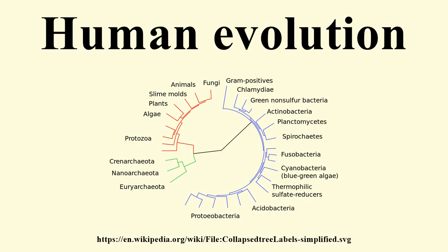According to the recent African origin of modern humans theory, modern humans evolved in Africa possibly from Homo heidelbergensis, Homo rhodesiensis or Homo antecessor, and migrated out of the continent some 50,000 to 100,000 years ago, gradually replacing local populations of Homo erectus, Denisova hominins, Homo floresiensis and Homo neanderthalensis.